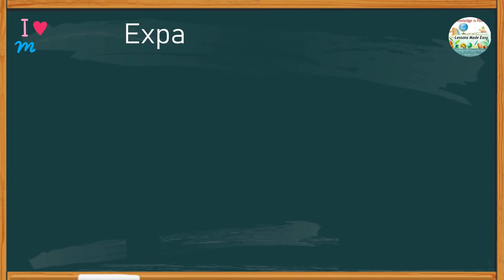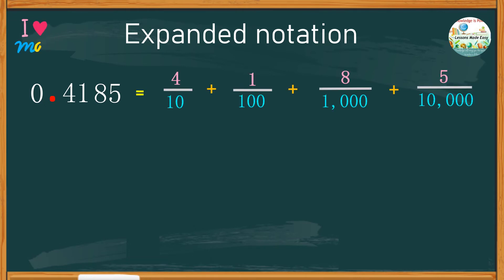We can also do expanded notation of decimals by showing the value of each digit in a decimal form. Earlier, we expanded 0.4185 this way, where each digit is expressed as fraction with powers of 10.